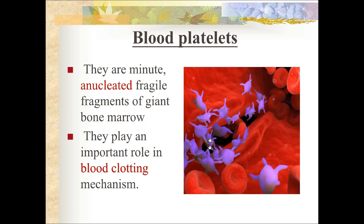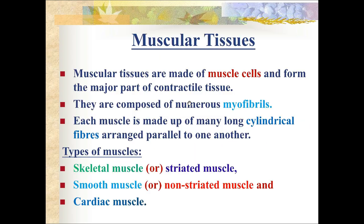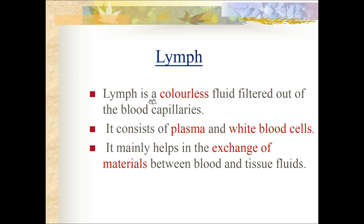Blood platelets are minute, anucleated, fragile fragments produced from giant cells of bone marrow. They play a very important role in the blood clotting mechanism - when blood oozes out from a cut, platelets prevent excessive bleeding. Lymph is a colorless fluid filtered out of blood capillaries. It consists of plasma and white blood cells and mainly helps in the exchange of material between blood and tissue fluid.